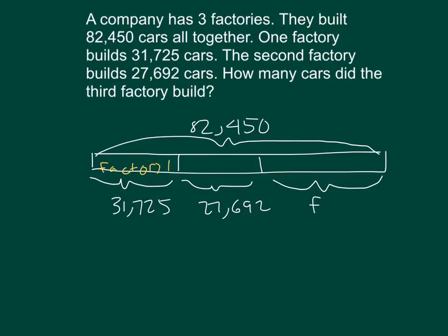So, we know, hey, this is factory one, and this is factory two, and this is factory three, or what we're solving for. So, the first thing that we're going to go ahead and do, is that we'll go ahead and add together these two numbers, so that we know how much the factory one and factory two have created all together.